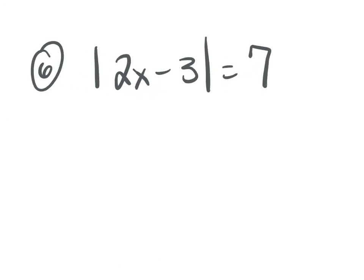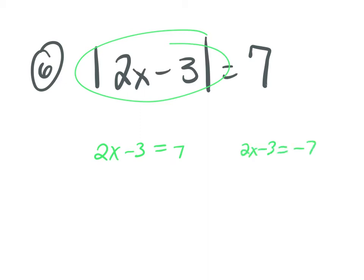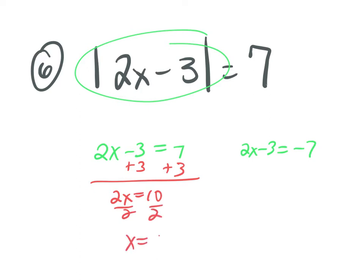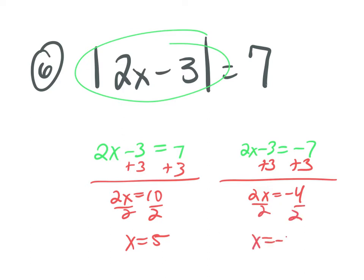This gets redundant — that's good, repetition. Is my absolute value isolated? Yes. I have two equations: 2x minus 3 equals positive 7, and 2x minus 3 equals negative 7. Add 3 to both sides: 2x equals 10, divide by 2, x equals 5. Add 3 to both sides: 2x equals negative 4, divide by 2, x equals negative 2.